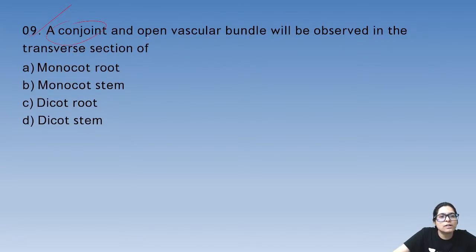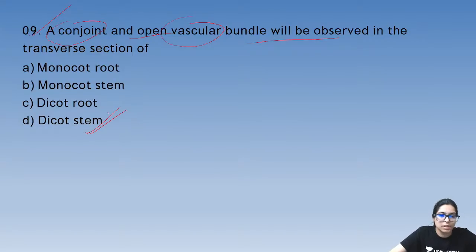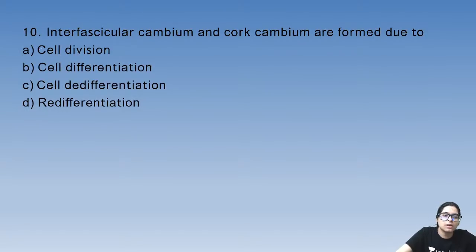A conjoint and open vascular bundle will be observed in the transverse section of — it will be found in the dicot stem.